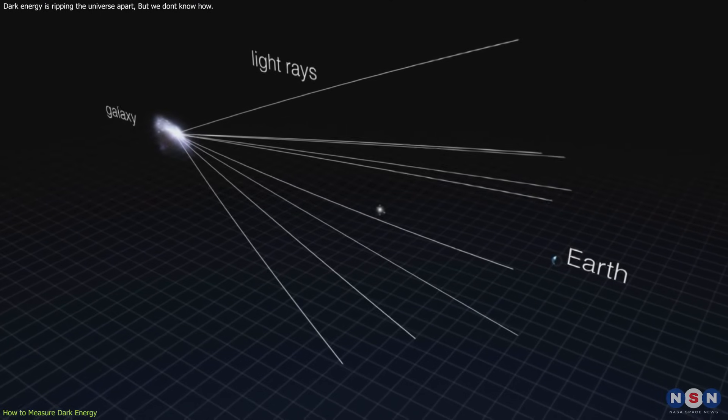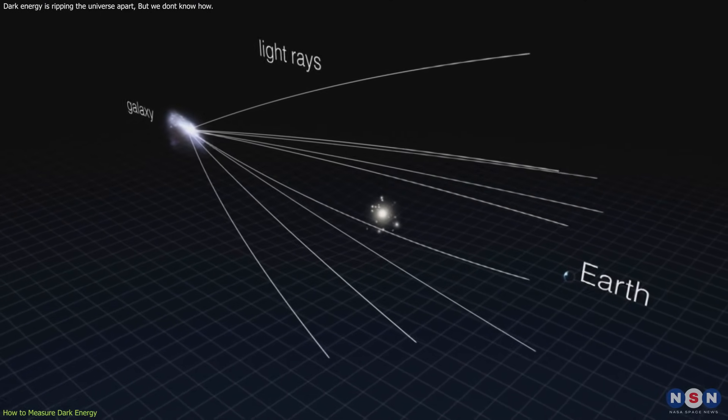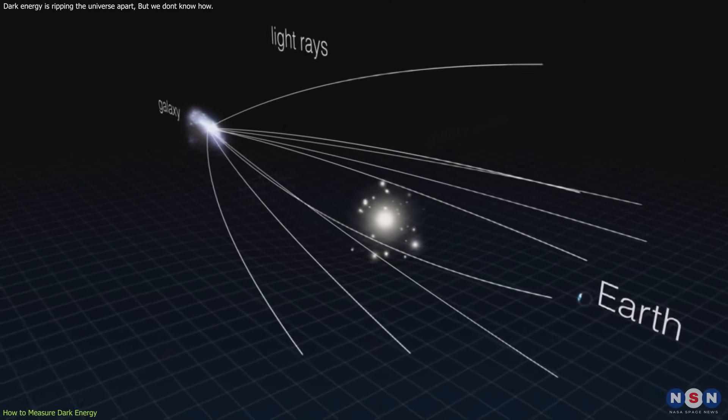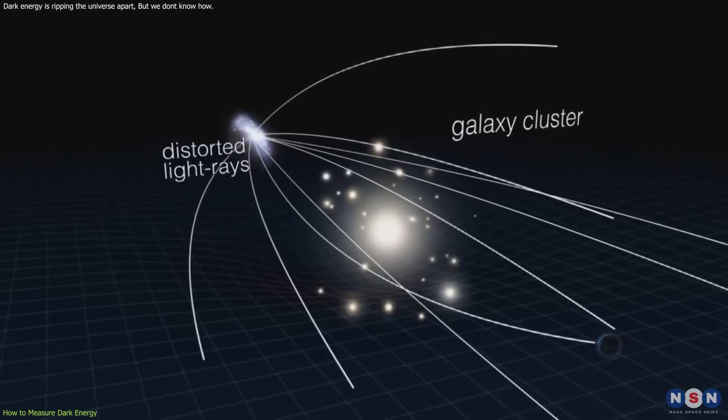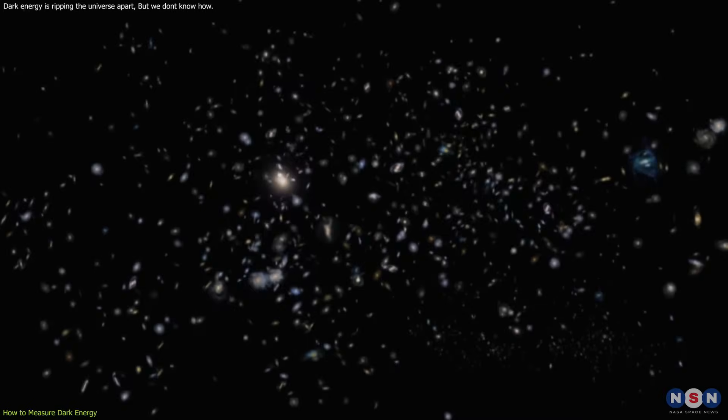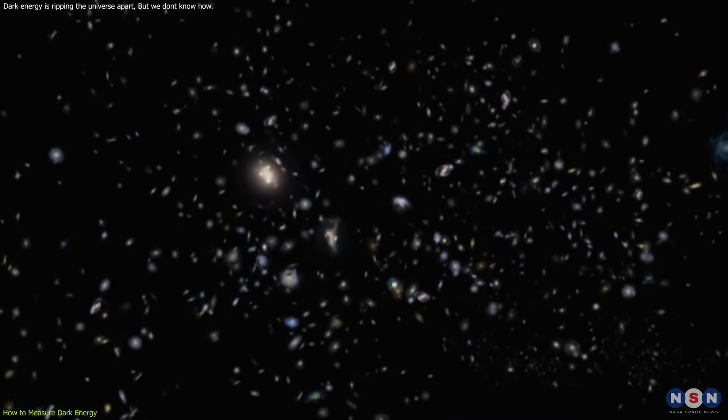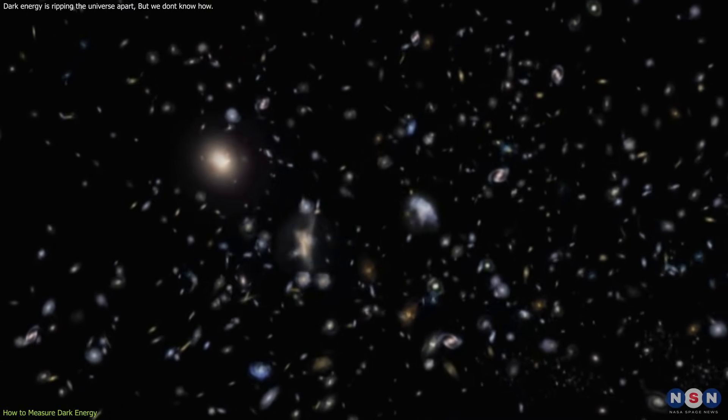Weak gravitational lensing is the phenomenon of light bending due to the gravity of massive objects, such as galaxies or clusters of galaxies. By observing how the shapes and orientations of distant galaxies are distorted by the foreground mass, we can measure the distribution of matter in the universe and how it evolves over time.